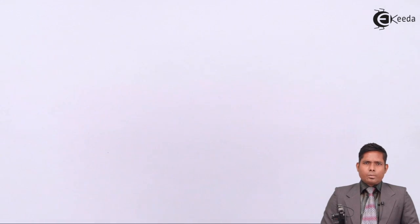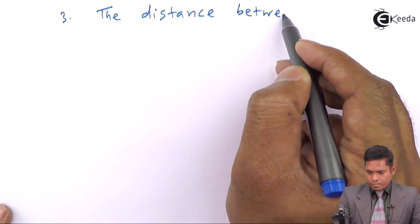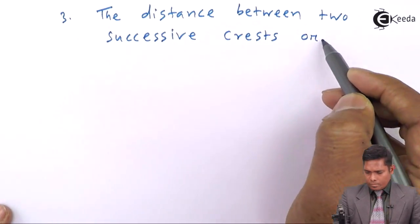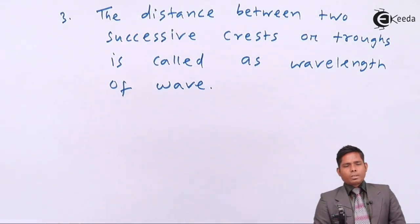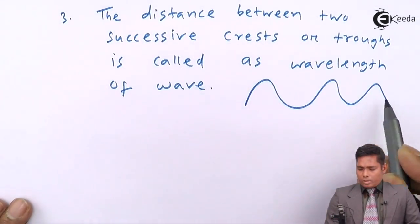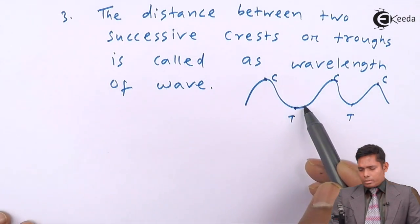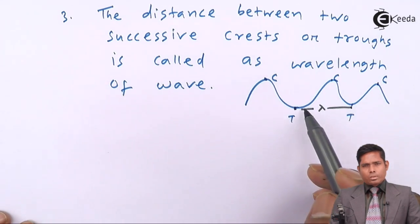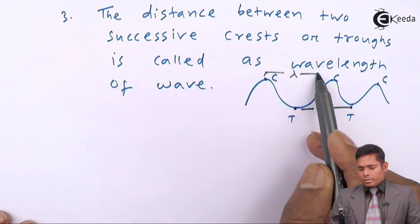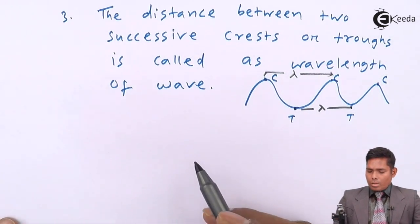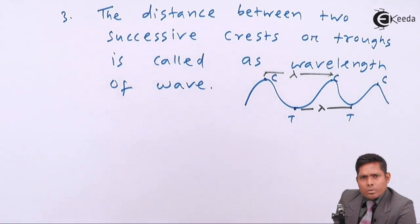The distance between two successive crests or troughs is known as the wavelength of the wave. So the distance between two successive crests — crest here, crest here — or trough here, trough here — this distance is the wavelength. The distance between two consecutive troughs, and similarly the distance between two consecutive crests, is also known as wavelength. We can also define wavelength as the distance between any two successive particles which are in the same state of vibration or having the same phase.